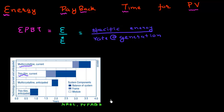This NREL report, released in 2001, says that solar modules made of multi-crystalline or single-crystalline based solar cells have an energy payback time of 3.8 years. Solar modules made using thin-film based technologies have an energy payback time of 3 years.